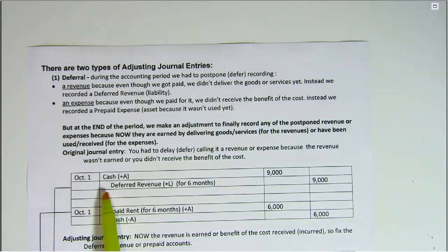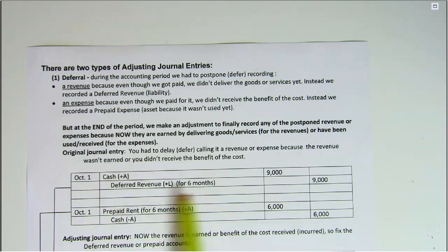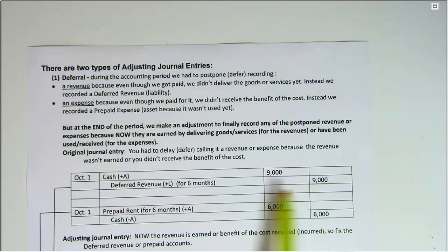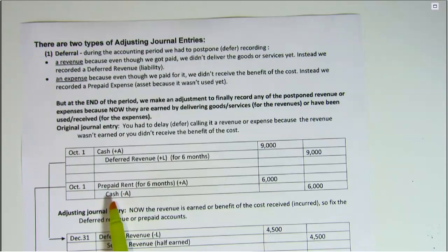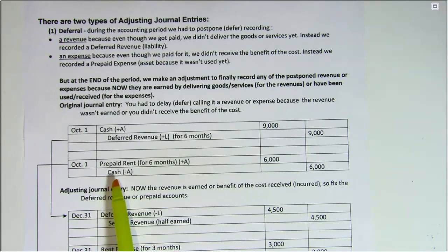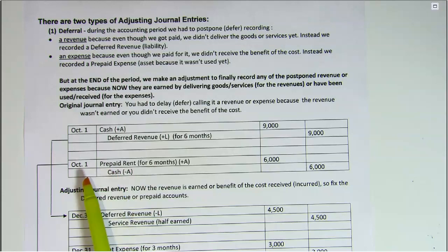In our first example, we got paid but we didn't do any work. So we increased the asset cash by debiting, but we increased the liability deferred revenue by crediting because we have not yet earned it — we owed our customers services for a period of six months.